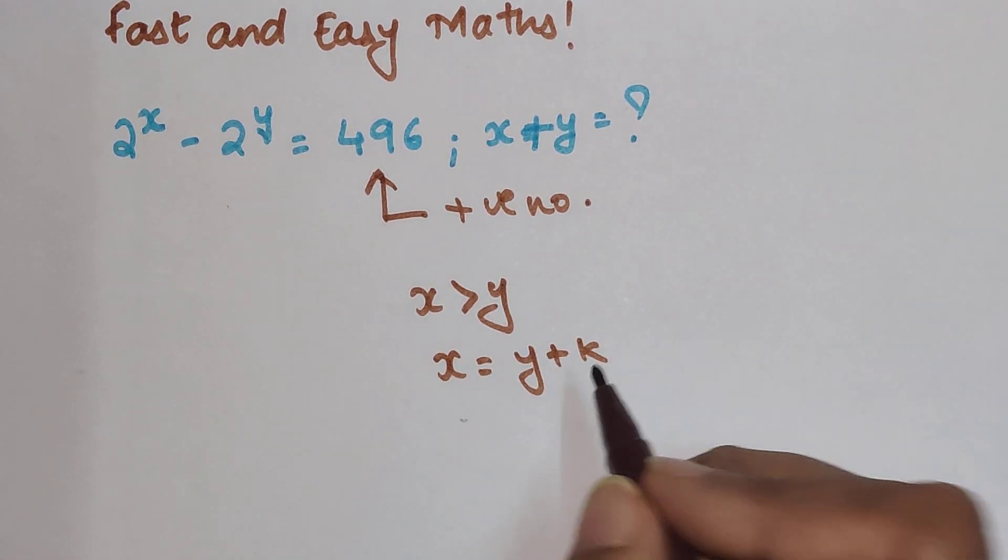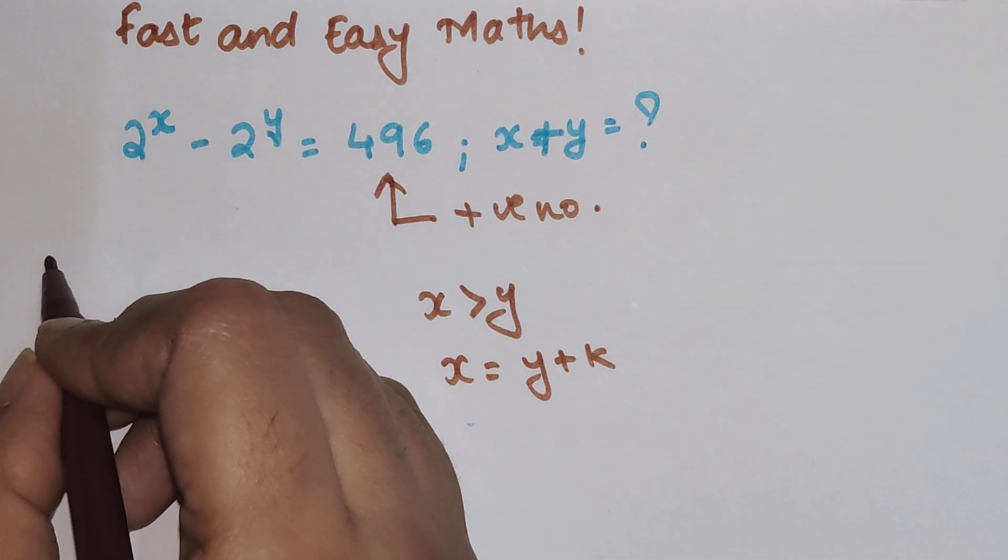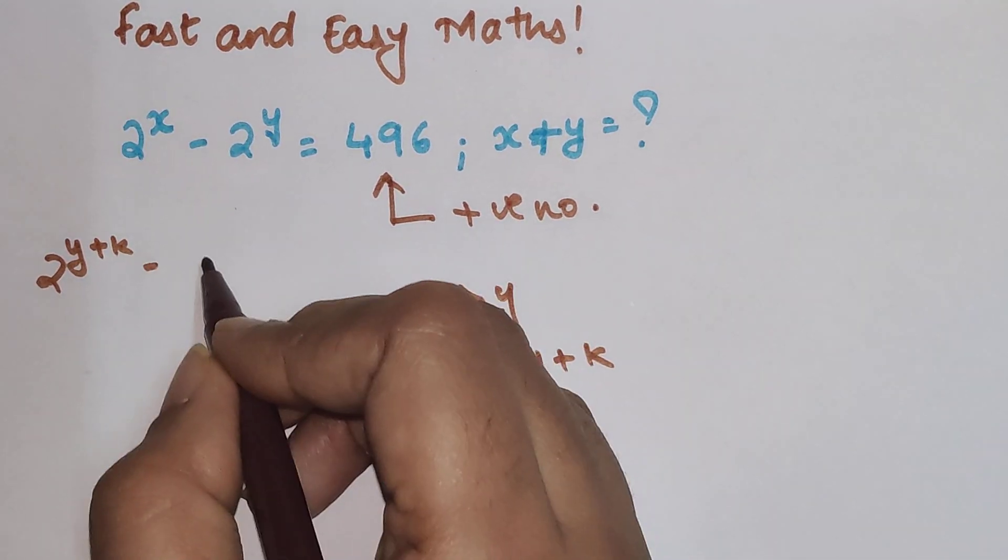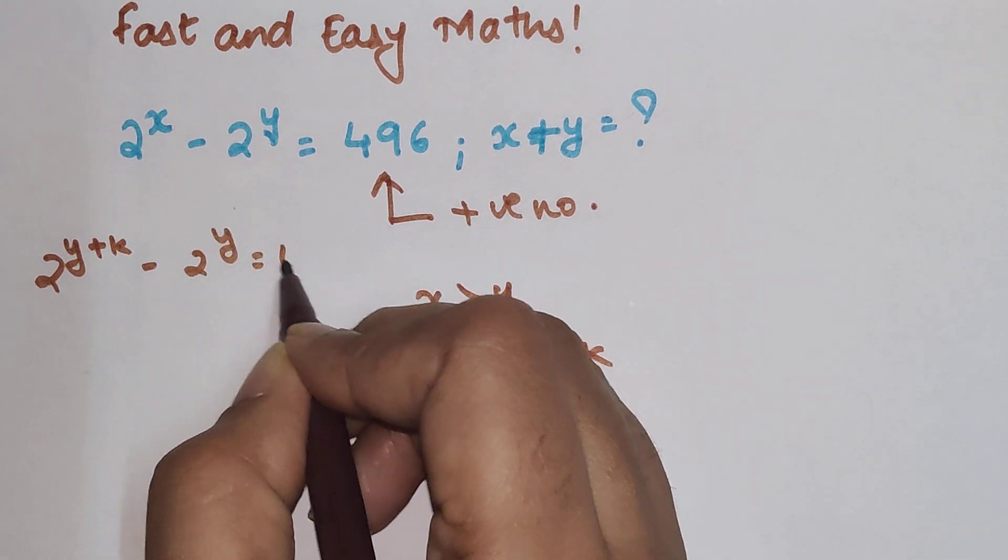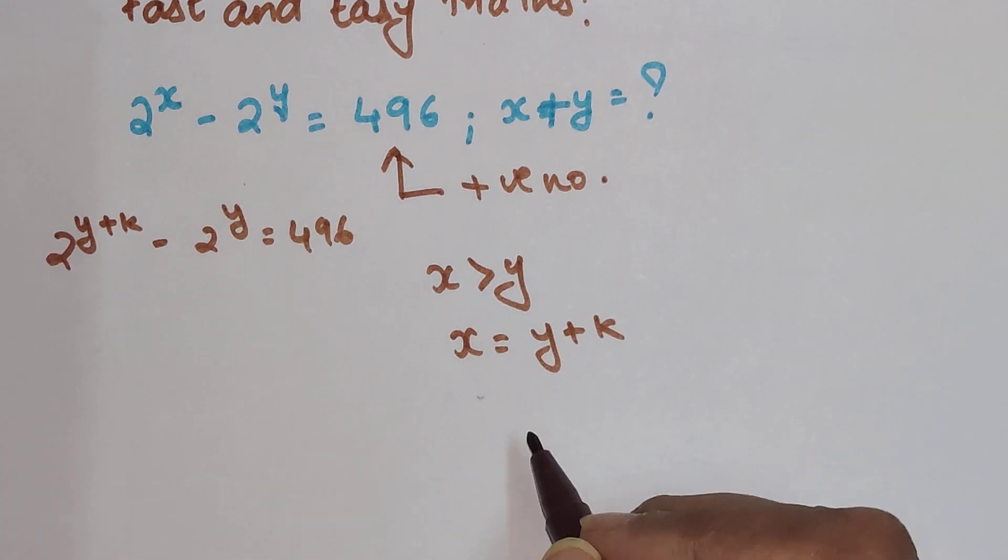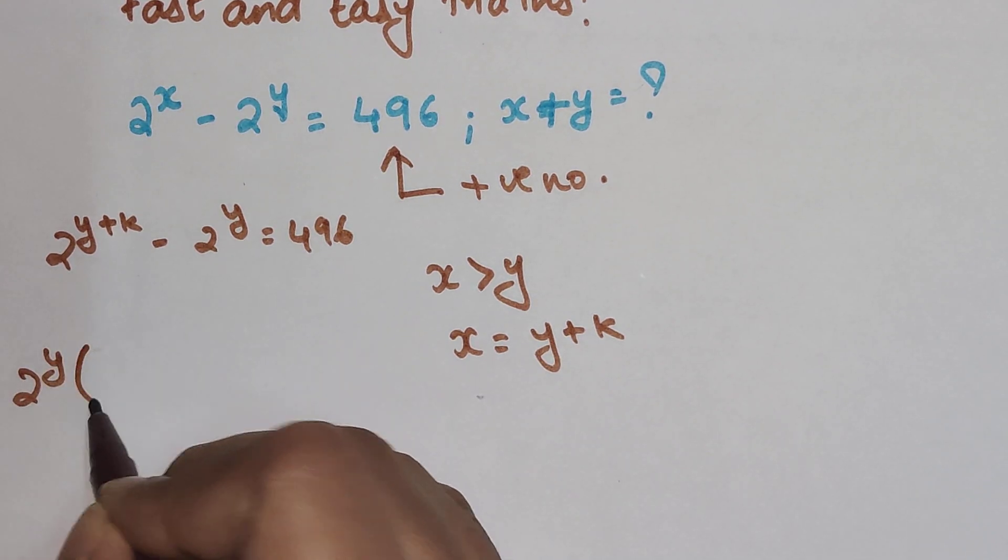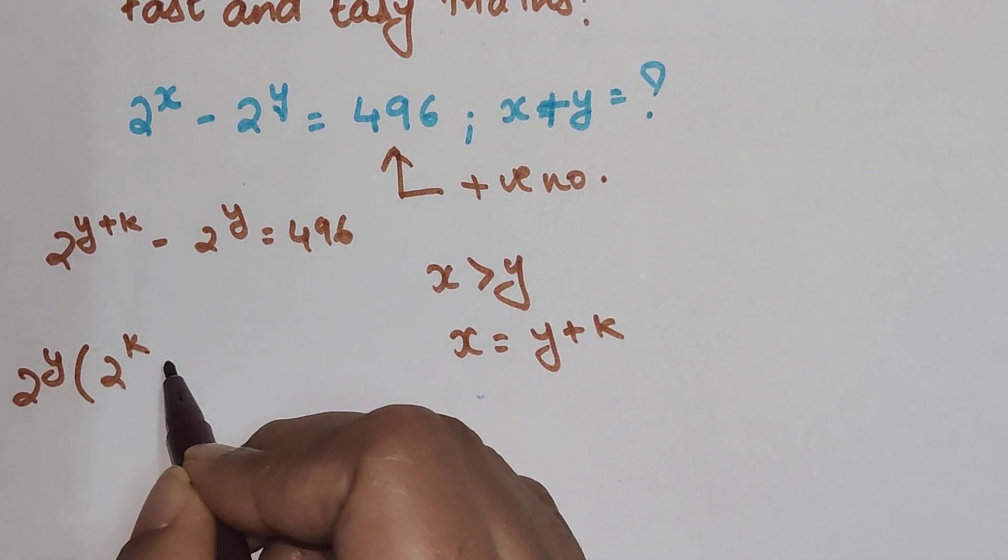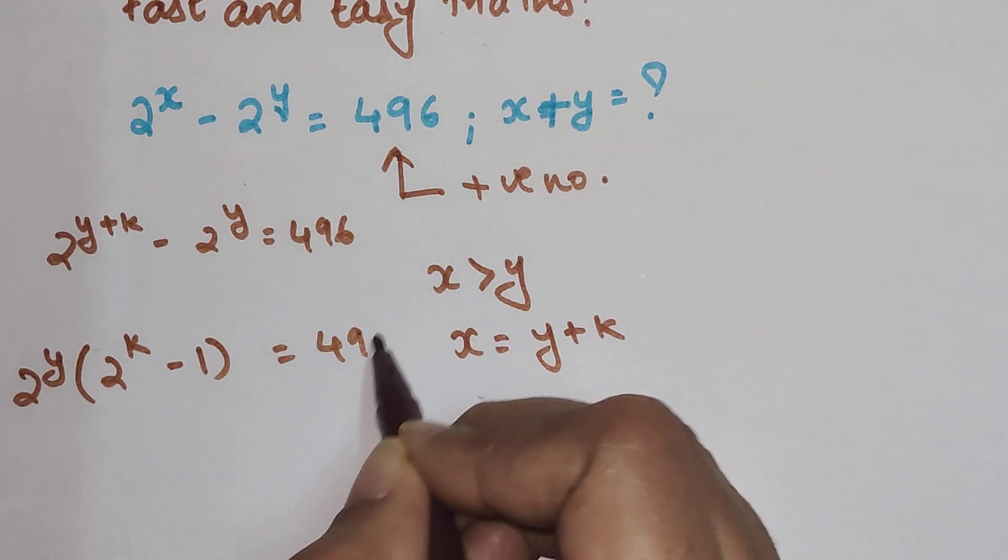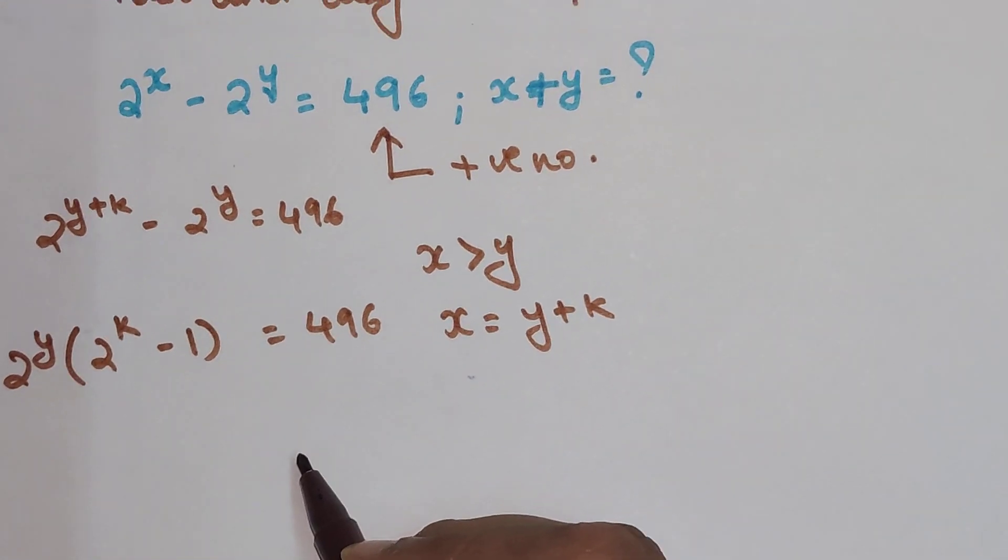From here you can start solving your question. So you will have 2 raised to y plus k minus 2 raised to y equals 496. Now out of these two, I can take out 2 raised to y, so I will be left with 2 raised to k minus 1 equals 496.